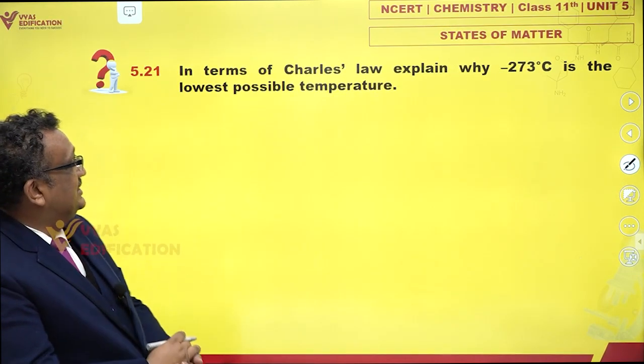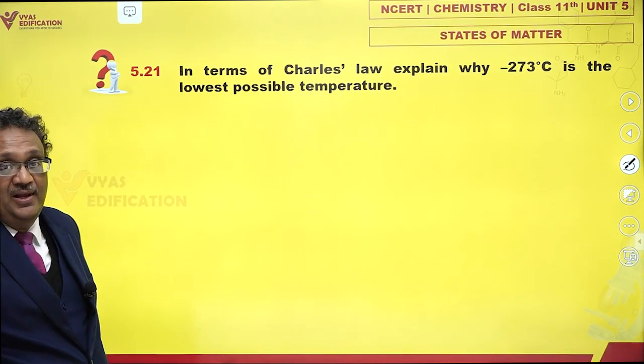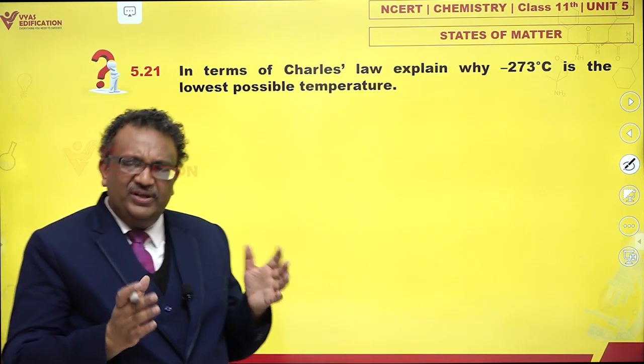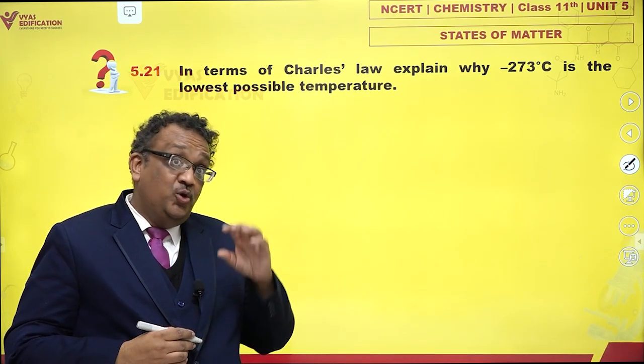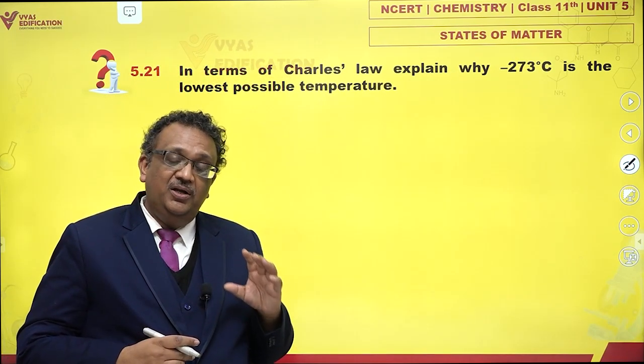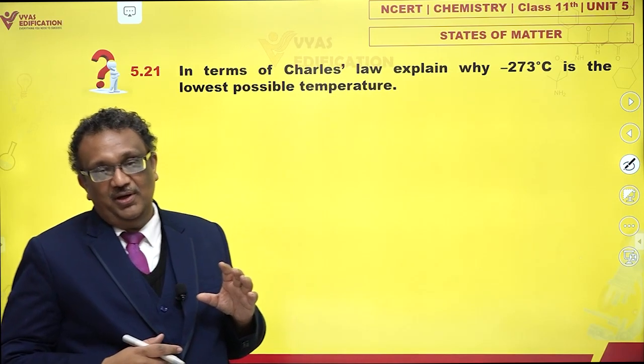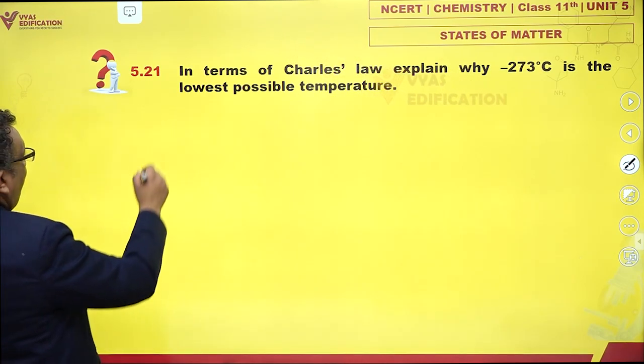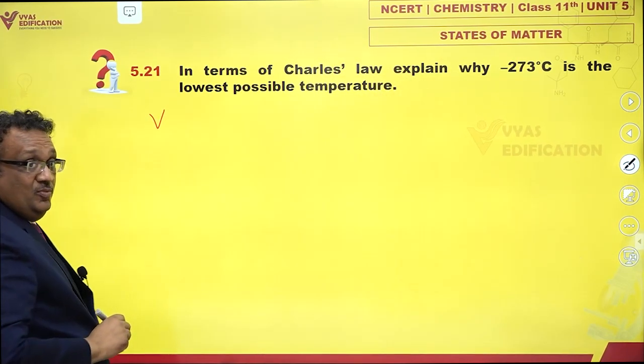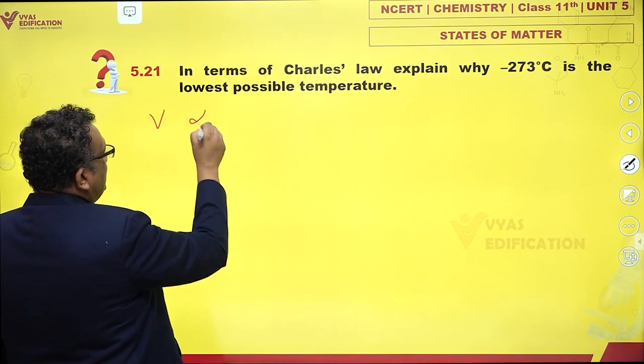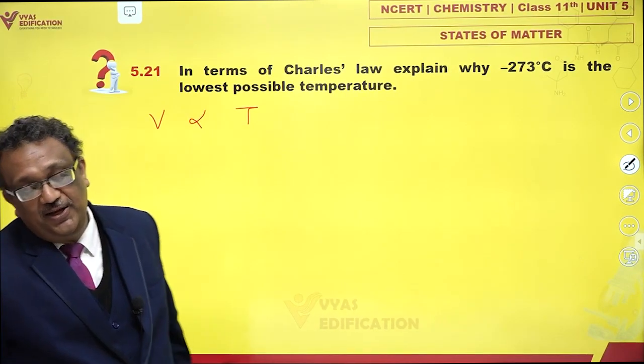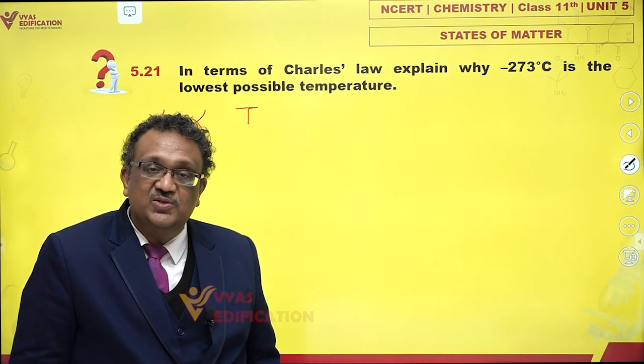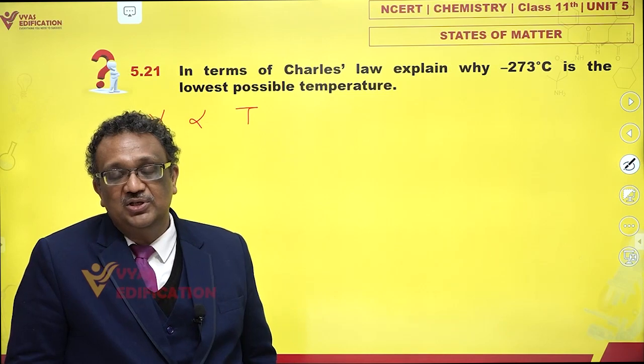Charles law says that if you take a fixed amount of gas, that means fixed number of moles of gas at constant pressure, and you measure its volume at different temperatures, then you would find that volume of any gas is proportional to its absolute temperature T.